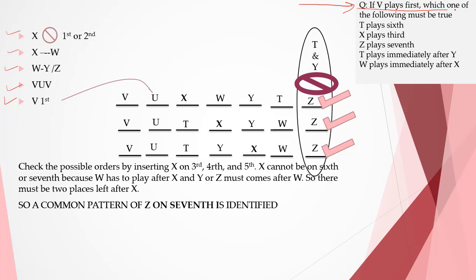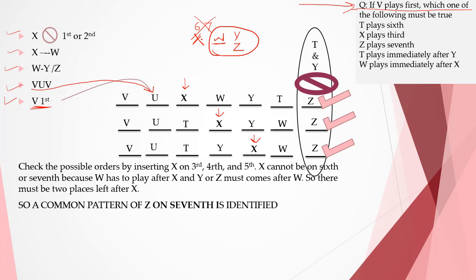If V plays first, which one of the following must be true? Our question starts with V playing first, so U must be on second. All we have to do is insert X on third, fourth, and fifth positions to check the possible orders. X can't be on sixth or seventh position because W has to play after X and Y or Z must come after W — so two places must be vacant after X. The question asks which one must be true. In all the possible ways, we can see that Z is on seventh. Other options may be correct but are limited to one or two sequences, whereas in all ways, Z is on seventh.